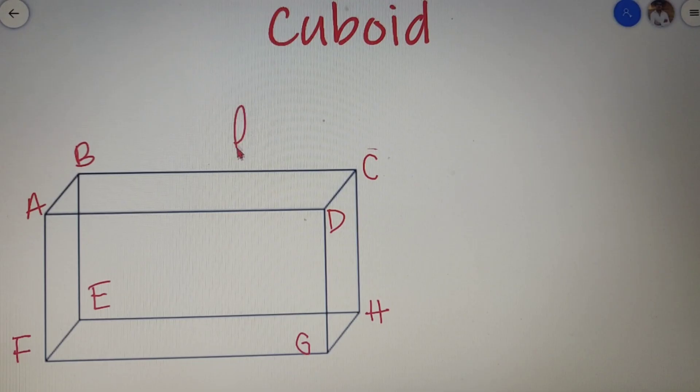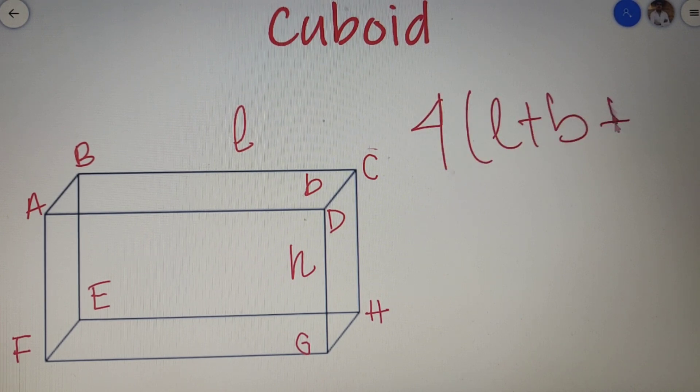If the length of the cuboid is L, the breadth of the cuboid is B and the height of the cuboid is H, then I can say that the perimeter of a cuboid is equal to four times L plus B plus H.